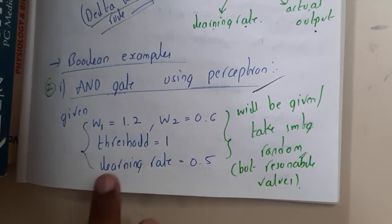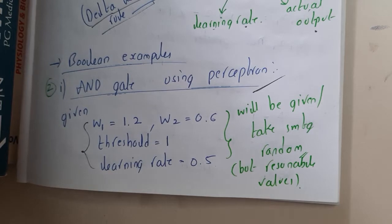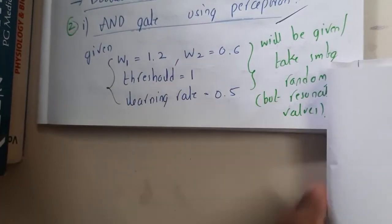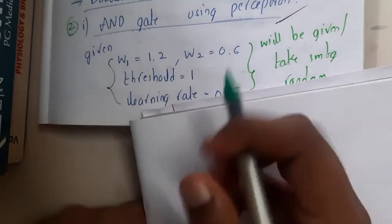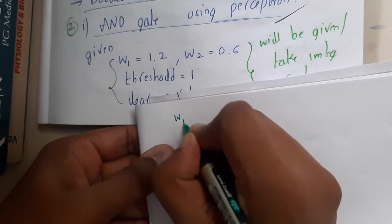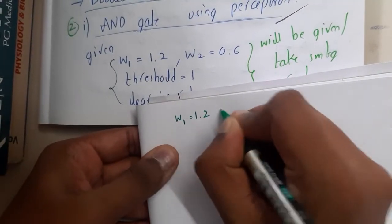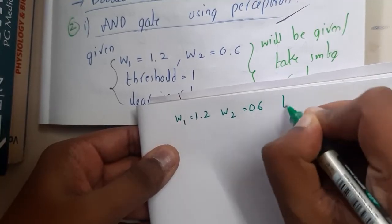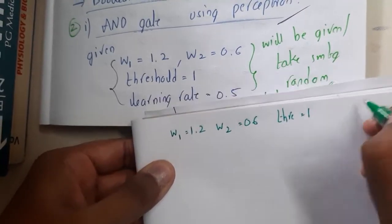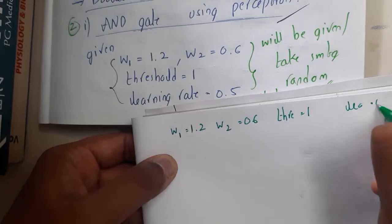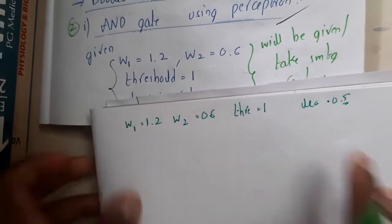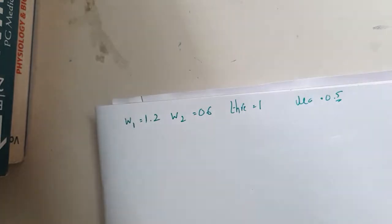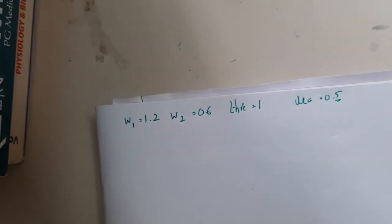You can take the same values — they are easy to remember. So let me write down the values: weight one is 1.2, weight two is 0.6, threshold is 1, and learning rate is 0.5. Writing all these values will help you understand the steps.